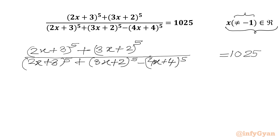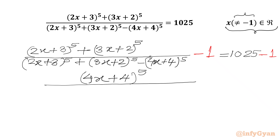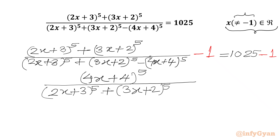Now we will subtract 1 from both sides. So let me write minus 1 on both sides. Once we simplify the left-hand side, we will get only (4x+4)^5 in the numerator, and the denominator would remain as (2x+3)^5 + (3x+2)^5 - (4x+4)^5, and the right-hand side becomes 1024.